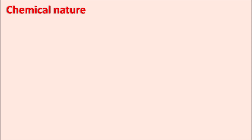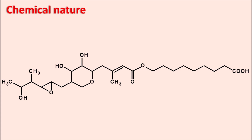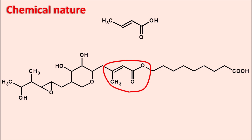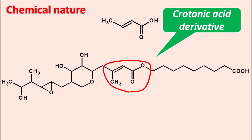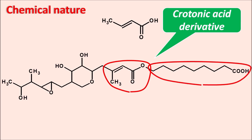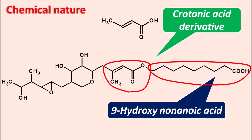Looking at the chemical structure of mupirocin, within the large structure we can observe an ester functionality along with alpha-beta unsaturation. This moiety can be compared to crotonic acid, making mupirocin a crotonic acid derivative. It is an ester formed between crotonic acid and an aliphatic acid — specifically 9-hydroxynonanoic acid, which contains nine carbons with a terminal OH group.